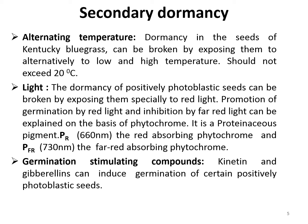Such promotion of germination by red light and inhibition by far-red light can be explained on the basis of phytochrome. Phytochrome is a proteinaceous pigment known to occur in two forms: PR, the red-absorbing phytochrome, which has a light absorption peak at 660 nm, and the far-red absorbing phytochrome, which has a light absorption peak at 730 nm. The next method involves germination-stimulating compounds. Kinetin and gibberellin can induce germination of certain positively photoblastic seeds — for example, tobacco and tomato — even in the dark. Besides these, potassium nitrate and ethylene are also reported to stimulate germination in certain seeds.